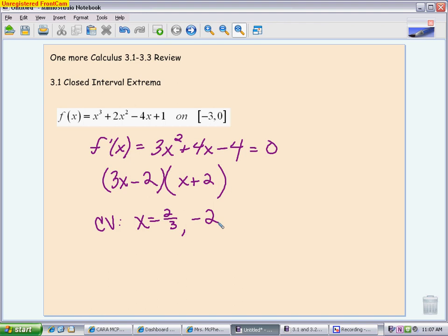Now, we want to make a table, and contained in our table should be any critical value that is in the interval. If you look at your critical values, the 2 thirds is actually not in the interval, so we're not going to discuss it. Negative 2 is, so it goes in my table. And then, I also want to put the endpoints of the interval in my table. It doesn't matter what order, as long as you have all the things in your table that you need to check.